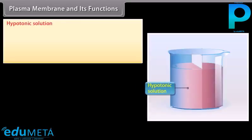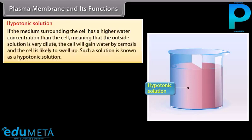Hypotonic solution: If the medium surrounding the cell has a higher water concentration than the cell — meaning the outside solution is very dilute — the cell will gain water by osmosis and is likely to swell up. Such a solution is known as a hypotonic solution.